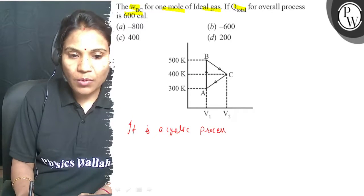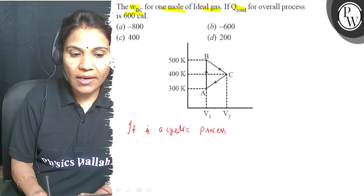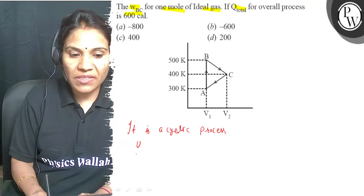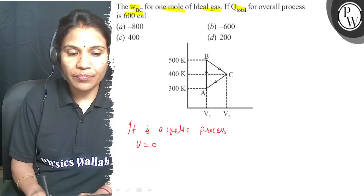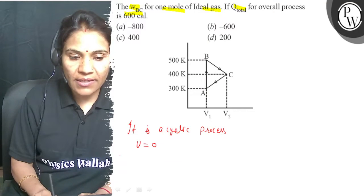For cyclic process, if we represent internal energy as U, its value is zero. U is internal energy.